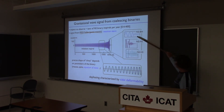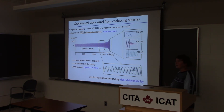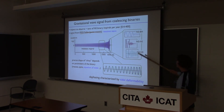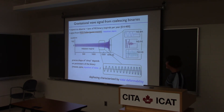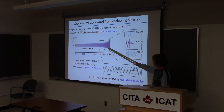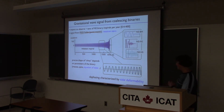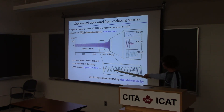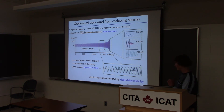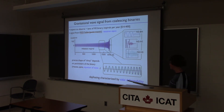For two neutron stars, there are many different outcomes. It could form a hypermassive neutron star that then collapses, or it could collapse immediately. That gives rise to many different features in these merger waveforms. There's also another effect during the inspiral: a small effect that accumulates over the tens of thousands of cycles. Depending on the neutron star equation of state, the phase evolution is slightly different, and that dephasing is characterized by a single parameter called the tidal deformability.